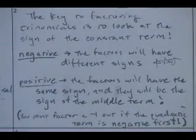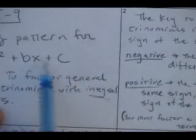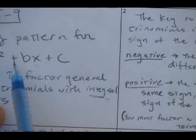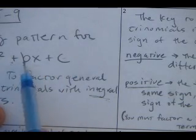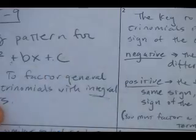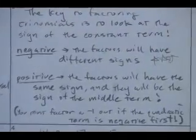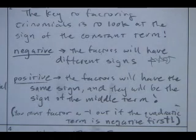So when that c term, when I'm talking about the constant term, I'm talking about this guy here. When this guy's positive, I look what's in front of this guy, and that tells me what both factors are. When this guy's negative, it gets a little bit more complicated. So we'll deal with the negatives first, and then we'll do a positive one.